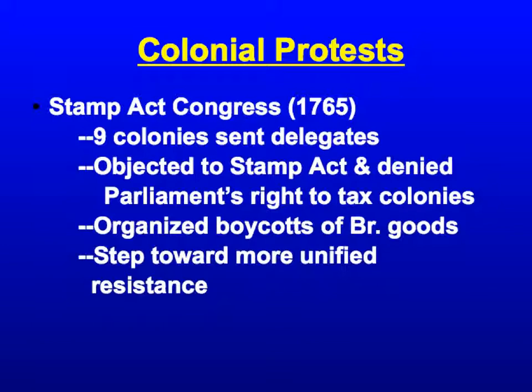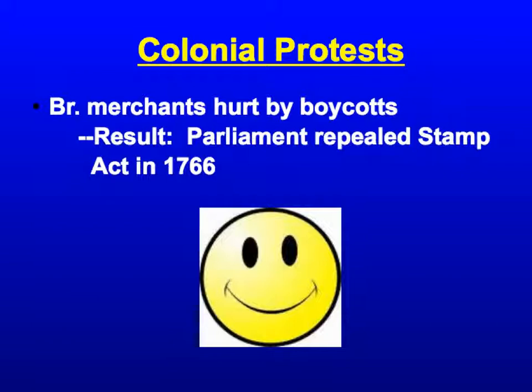Eventually, instead of only using violent protest, they formed the Stamp Act Congress in 1765. Nine colonies sent delegates, basically objecting to the Stamp Act and denying Parliament's right to tax them. They organized boycotts against British goods — a step toward unified resistance, which would be very important later during the American Revolution. The boycotts worked well; they hurt British merchants, who then called on Parliament. Eventually, Parliament had to repeal the Stamp Act in 1766. That was a good form of civil disobedience — the Stamp Act Congress resulted in a positive outcome by getting the act taken off the books.